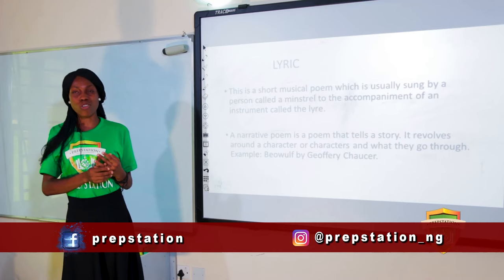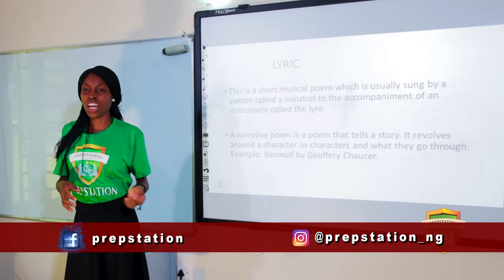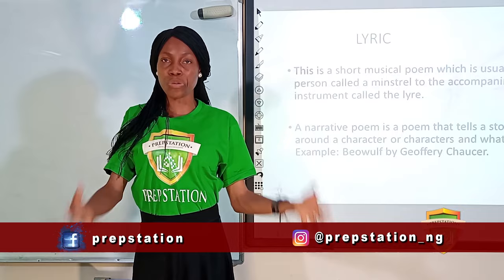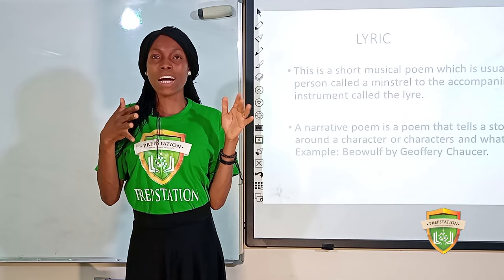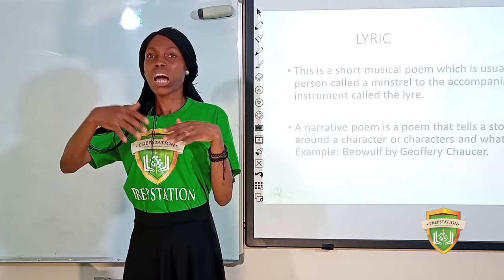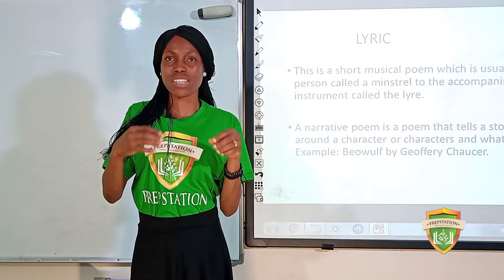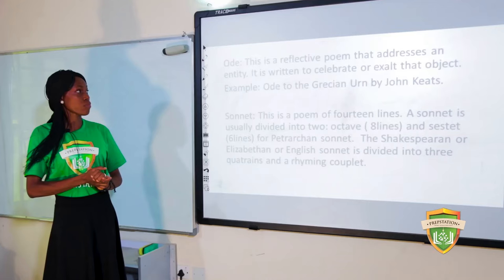A narrative poem is a poem that tells a story, revolving around a character or characters and what they go through. An example is Beowulf — a lengthy poem that covers when the hero was born, how he grew, his accomplishments, and the people he defeated.